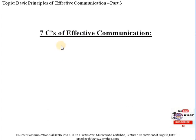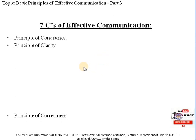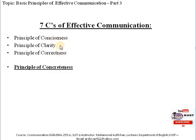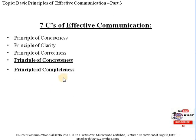Let's move towards the overall review of this lecture. Basically, in these lectures we are studying the seven C's of effective communication, or the seven principles. As we discussed in the first lecture, along with the introduction of these basic principles, the first principle of effectiveness and the second principle of effective communication is the principle of clarity. After that we have the principle of correctness. The first principle was discussed in the first lecture, and the second and third in the second lecture. In today's lecture, we are going to discuss the fourth and fifth principle — the principle of concreteness and the principle of completeness.